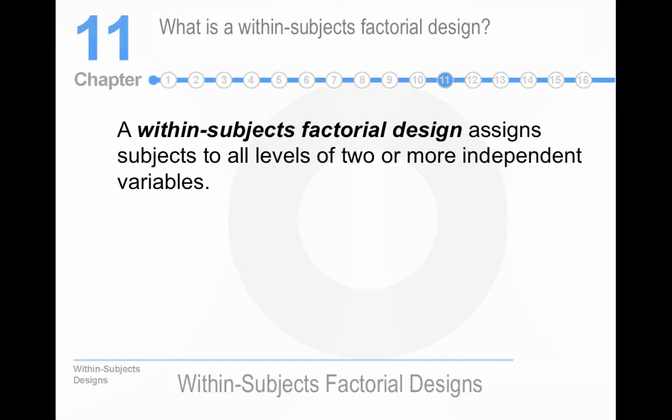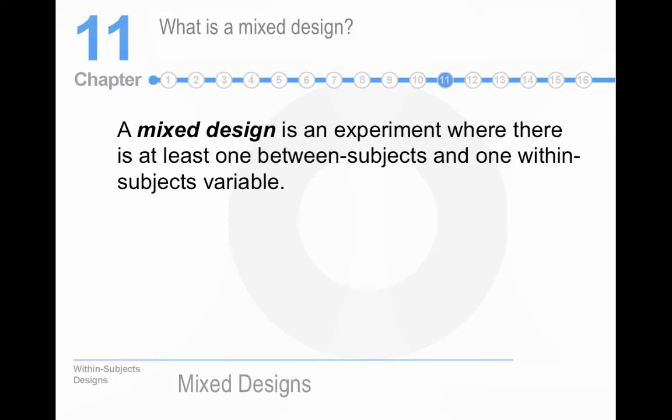It assigns subjects to all levels in a factorial design. So factorial means more than one independent variable. If it's within subjects factorial design, then you're in every condition again. A mixed design is kind of tricky. This is when at least one of the independent variables is run between subjects and one is run within subjects. My dissertation was a mixed design too. Let me give you an example.